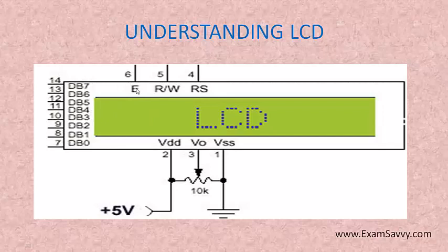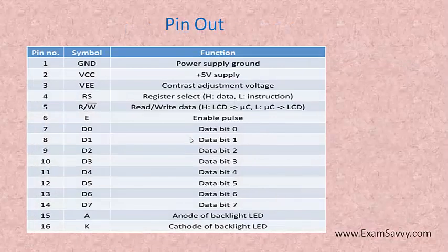Pin 6 is enable. We have to pulse it from low to high — if you give 0 to 1, then it is enabled. Pin 5 is read or write. If you want to perform a write operation, give 0; if you want to perform a read operation, give 1. Pin 4 is register select, used for selecting registers — whether command mode or data mode.